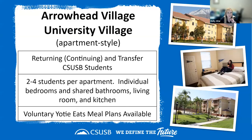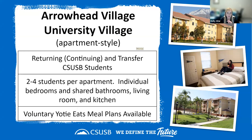If you are transferring in, we have two apartment communities: Arrowhead Village and University Village, open to continuing and transfer students. There are a number of apartment types with two to four students per apartment — everyone has an individual bedroom, a shared bathroom between two students, and shared living room and kitchen spaces. Students in our apartment areas are not required to have a meal plan, but there is a range of voluntary meal plans available. Arrowhead Village is on the same side of the street as the main campus near Coyote Village, and University Village is just across the street — a very brief walk.